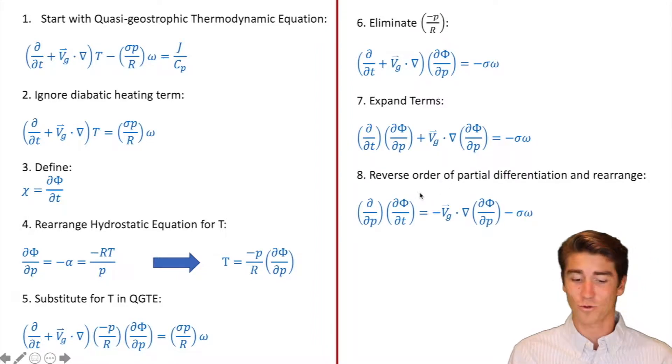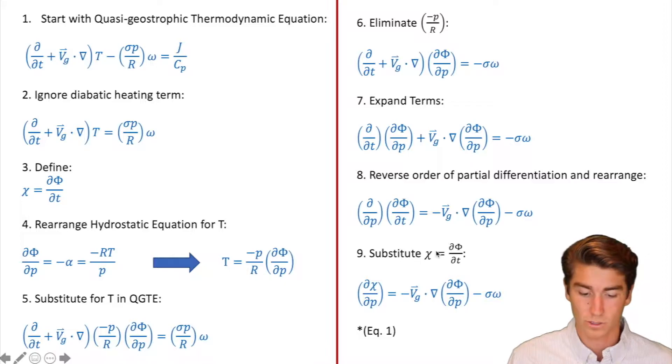Step eight, we're going to reverse the order of partial differentiation and rearrange. Sounds like a mouthful, but it's actually not that difficult. All you're going to do is take that dP, put it on the other side. Take that dT, put it under the dP. So we basically just switch those. It's a more simplified way of saying reversing the order of partial differentiation. And you'll also notice that this term here, our advection term, came over to the right hand side. Now we're going to substitute for d phi dT with what we called chi. We define that in step three. So where's our d phi dT? Right there. So we're going to substitute in chi and put it with the d dP. Right hand side stays totally the same. And after step nine, we have a new equation. We're going to call this equation one. We're going to hold onto it and use it later in the video.